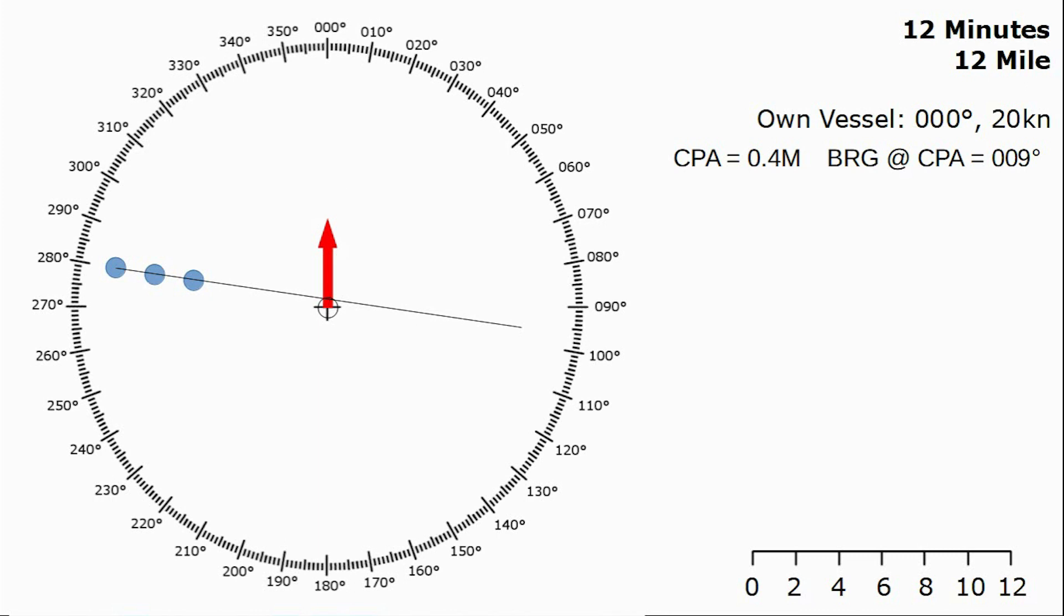Next thing we need is the time to the closest point of approach. We want to measure how far the dots have travelled in 12 minutes. We can see they've covered 3.8 miles relative in 12 minutes, and they've still got 6 miles to go. Now that 3.8 relates to 6 in the same way 12 relates to the time to the closest point of approach. We can complete a little bit of algebra to work out the TCPA which is going to be 18.9 minutes.